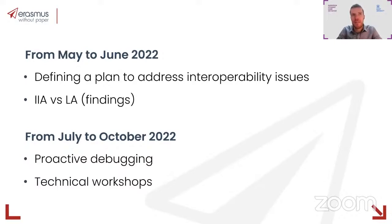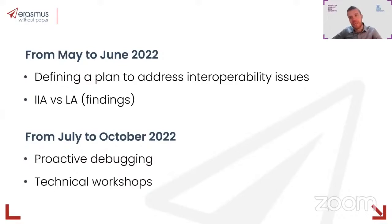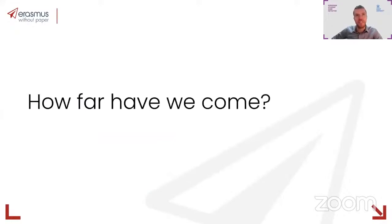It also became clear from proactive debugging that most of the blocking issues were connected to inter-institutional agreements. This proactive debugging took place from July until October onwards, and we will continue doing this exercise in order to try to identify blocking issues in the network. I already mentioned the technical workshops that were also important to take stock of the situation.